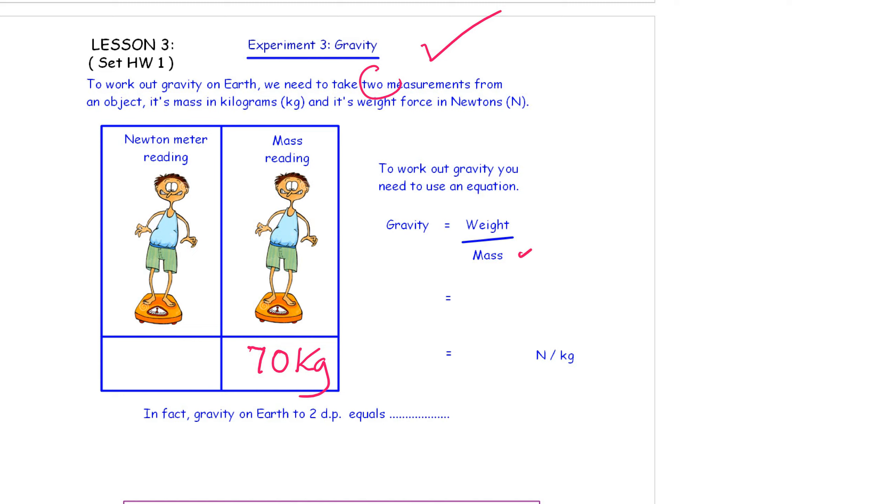I've got my mass. Now, my mass is the number of particles, the amount of matter in my body. Whereas, if I stand onto a Newton meter, it measures my weight force downwards. And when they measure that, it is 710 Newtons of weight force. So now what we do is, we've written out the equation, gravity is weight divided by mass.